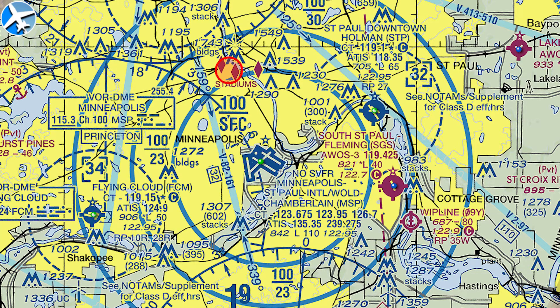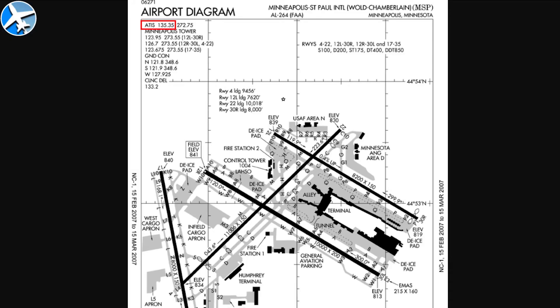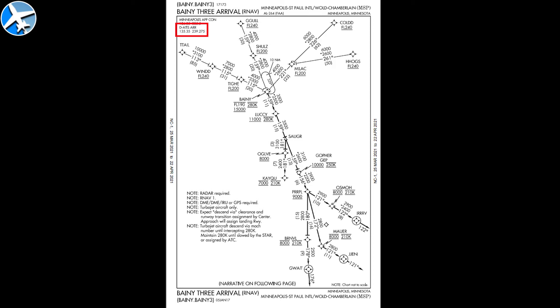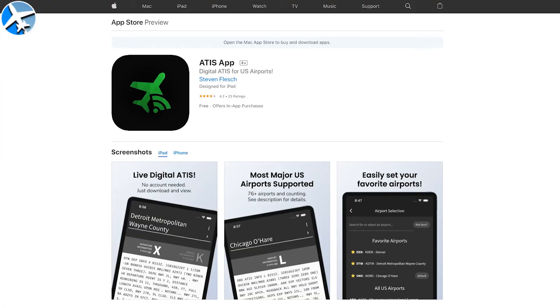If you're wondering where you can find all these weather reports, there are a few places to get an ATIS report. One is through the aircraft radio — you can find that frequency on a sectional chart. You'll also find the ATIS frequency on an airport diagram, and it can also be found on the arrival plate. You can also get the ATIS ahead of time using the ATIS app, currently only available in the App Store at US airports with digital ATIS.